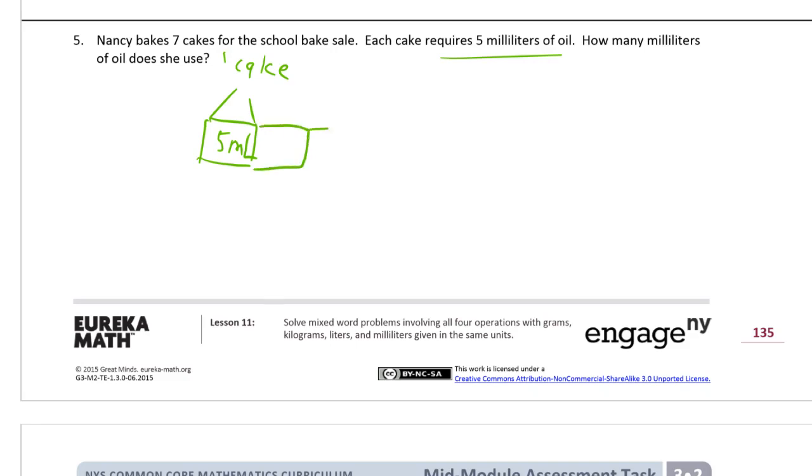And for 7 cakes, so we need 2, 3, 4, 5, 6, 7 cakes. So it's 7 fives, right? And you could write 5 milliliters in each box, but we could just also write this multiplication sentence. We need 7 fives equals 35. And you could just count these by fives too. 5, 10, 15, 20, 25, 30, 35.